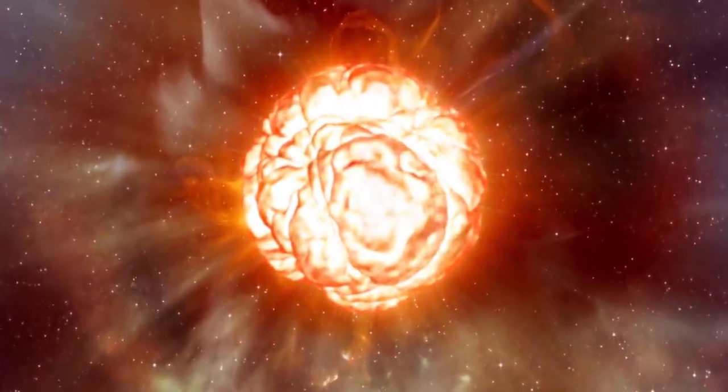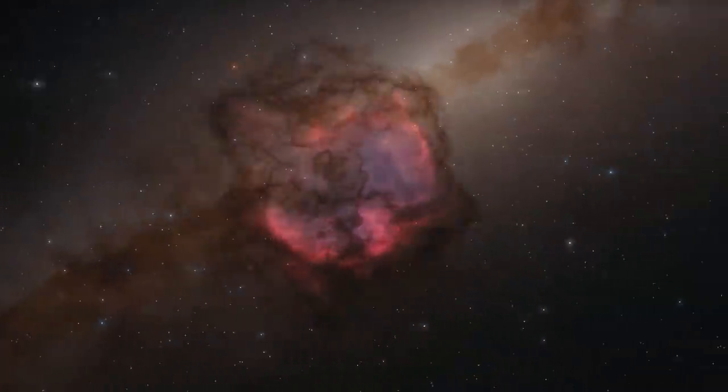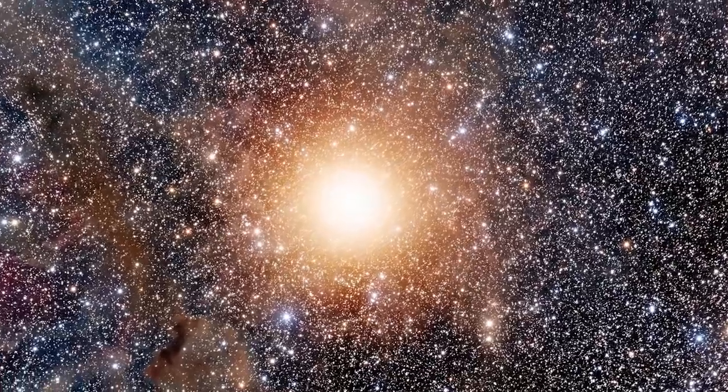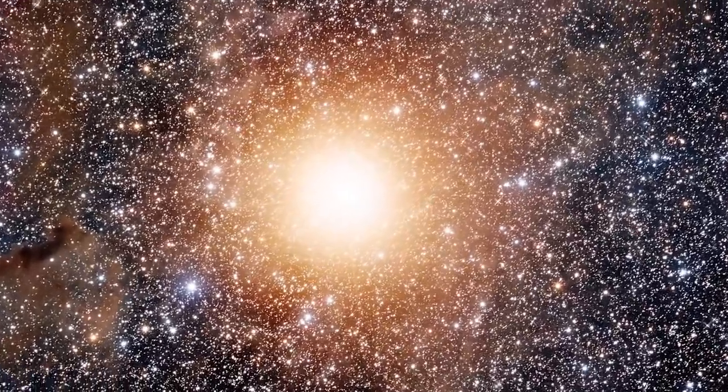It is well known that Betelgeuse is a mature star that will someday go supernova. The recent dimming has led to speculation that a supernova could happen at any moment, and what we could be seeing is the calm before the star expires in a cosmic blast.